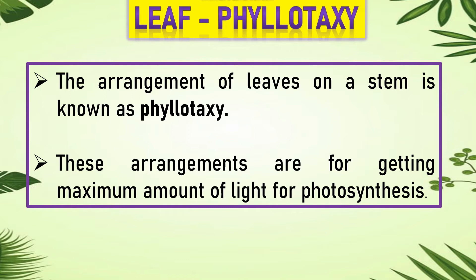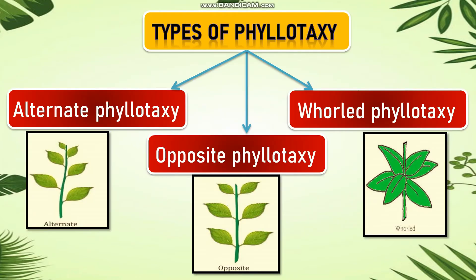Leaves need to be positioned in such a way that they get maximum sunlight, so the arrangement of leaves is very important. The three types of phyllotaxy are: alternate phyllotaxy, opposite phyllotaxy, and whorled phyllotaxy.